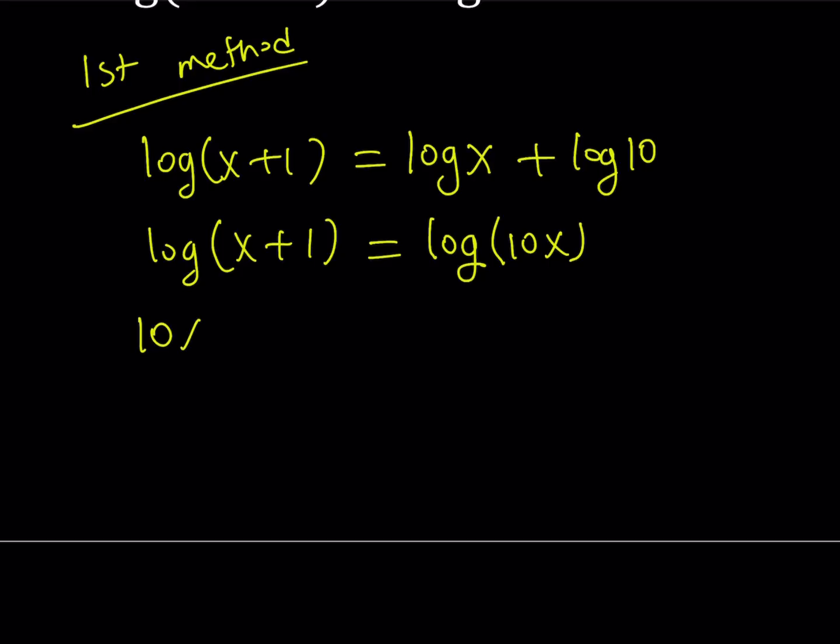So from here we can write 10X is equal to X plus 1. And this is a very easy linear equation with variables on both sides. So we're going to subtract X. That's going to give us 9X equals 1. And division is going to give us X equals 1/9.